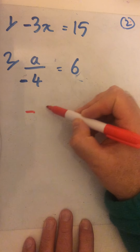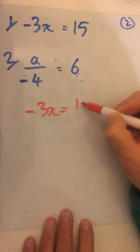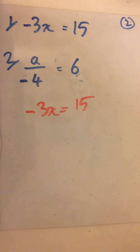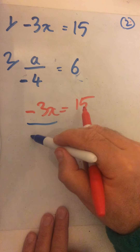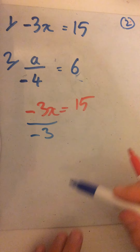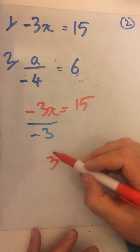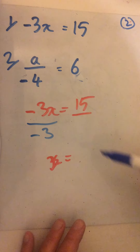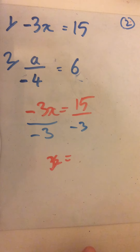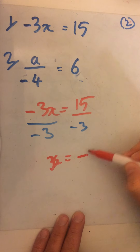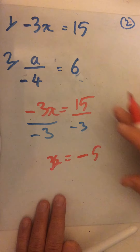Right, let's have a quick look. We've got minus 3x equals 15. I need to divide by minus 3 to give me a positive x. Do the same on the other side — divide by minus 3. 15 divided by minus 3 gives a negative answer. How many 3s in 15? 5. So x equals minus 5.